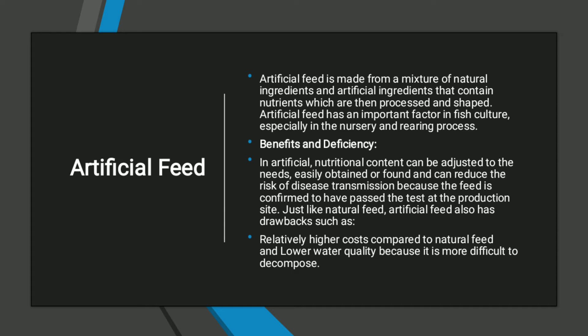As discussed in the previous lecture, we can control the amount of nutrients when preparing feed for fish — we select ingredients in controlled amounts, weigh them, mix them, regrind them, and then pack them for transport. We can also reduce the risk of disease transmission because the feed is well-prepared, well-managed, and well-controlled. Like natural feed, artificial feed also has drawbacks such as relatively higher cost and lower water quality because some feeds, especially pellet feeds, are non-degradable and difficult to decompose.